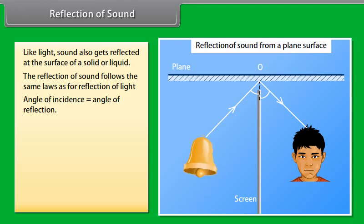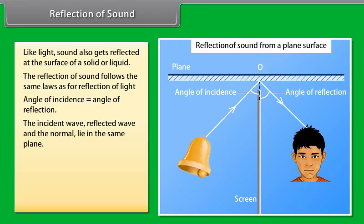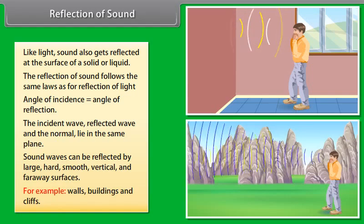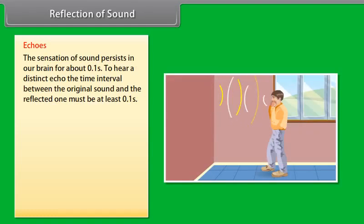Reflection of sound. Like light, sound also gets reflected at the surface of a solid or liquid. The reflection of sound follows the same laws as for reflection of light. Angle of incidence is equal to the angle of reflection. The incident wave, reflected wave, and the normal lie in the same plane. Sound waves can be reflected by large, hard, smooth, vertical and far away surfaces. Example: walls, buildings and cliffs.